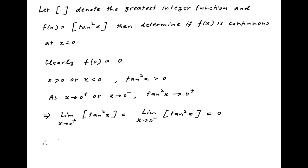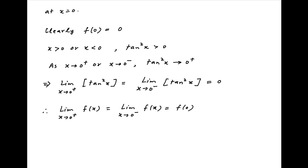Therefore, to conclude, the limit of f(x) as x tends to 0 from the positive side is equal to the limit of f(x) as x tends to 0 from the negative side, which is equal to f(0), and all of these are equal to 0. It therefore follows that f(x) is continuous at x equal to 0, which is the required result.